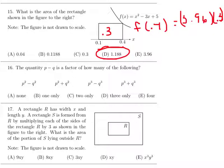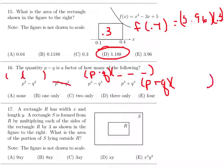The quantity p minus q is a factor of how many of the following? Well, this is p minus q, p plus q. This does not factor. It's the sum of two squares. This is p minus q, and then times p squared plus pq plus q squared. And this is the sum of two cubes. So it would be p plus q times a trinomial. So p minus q is a factor of two of these.